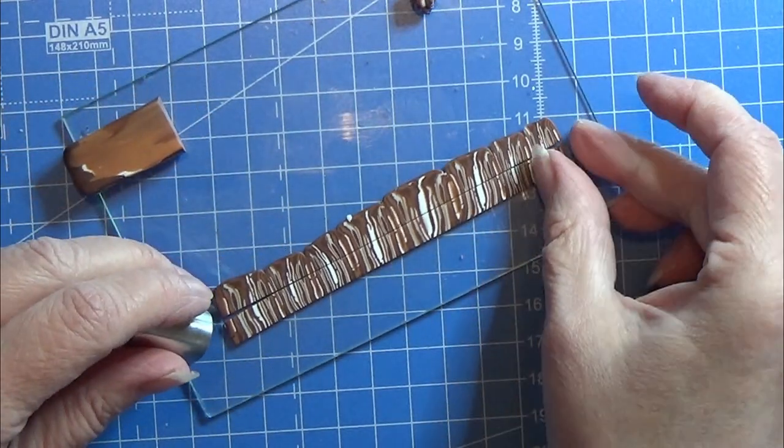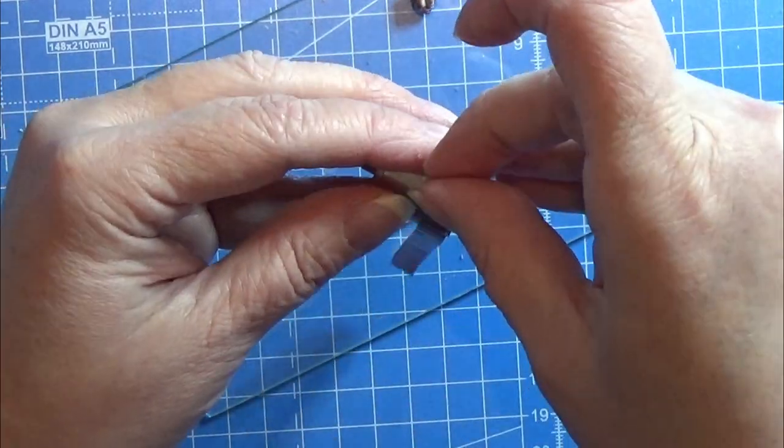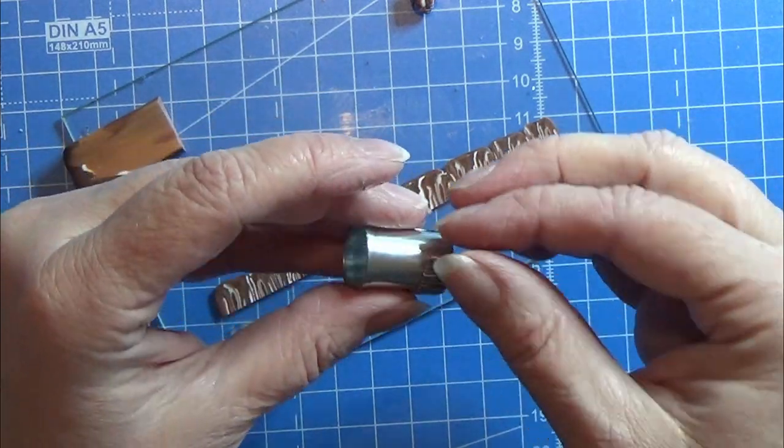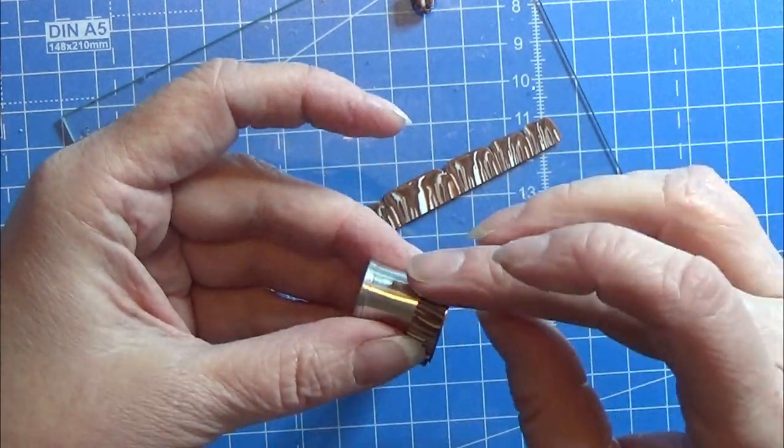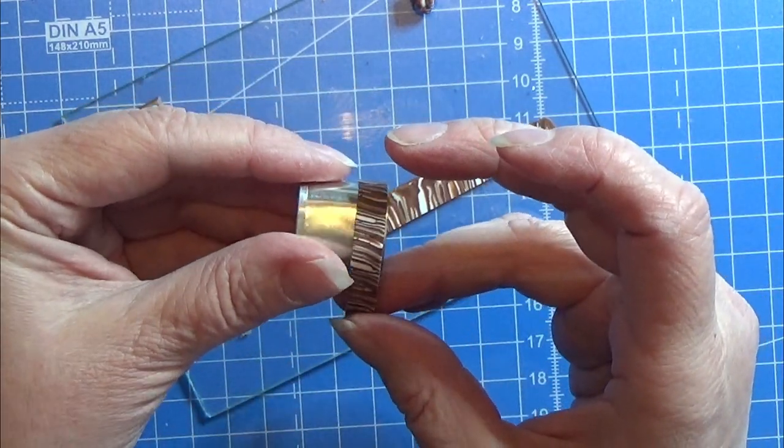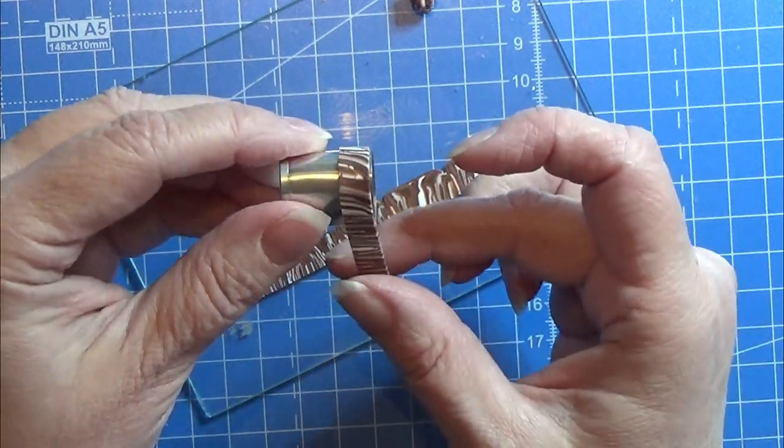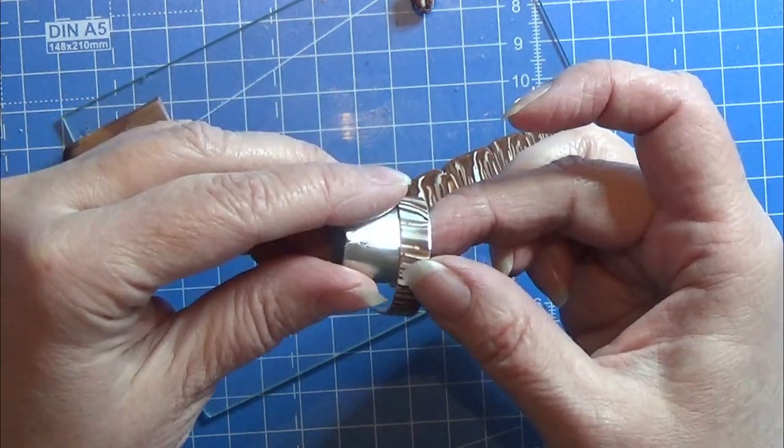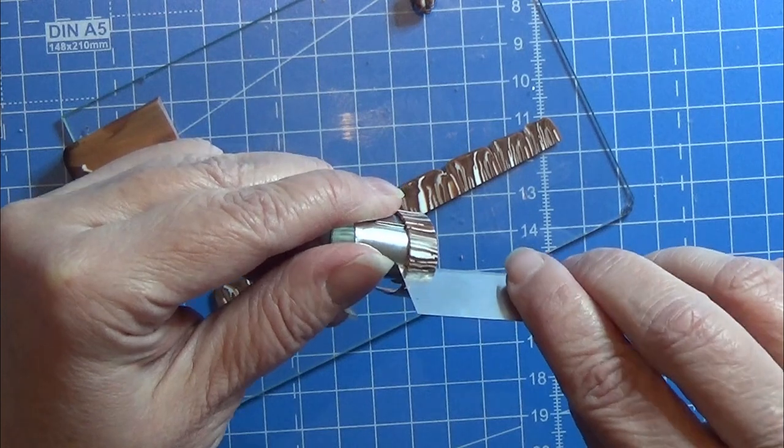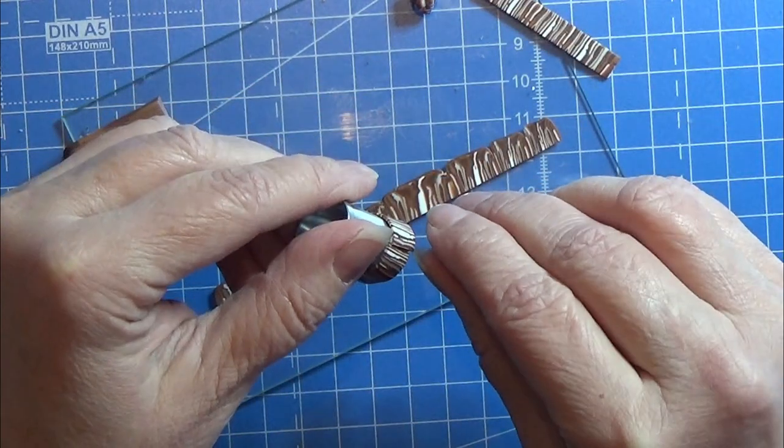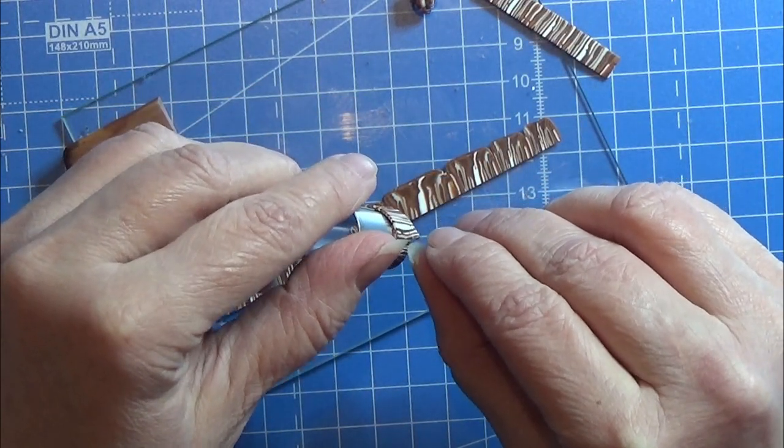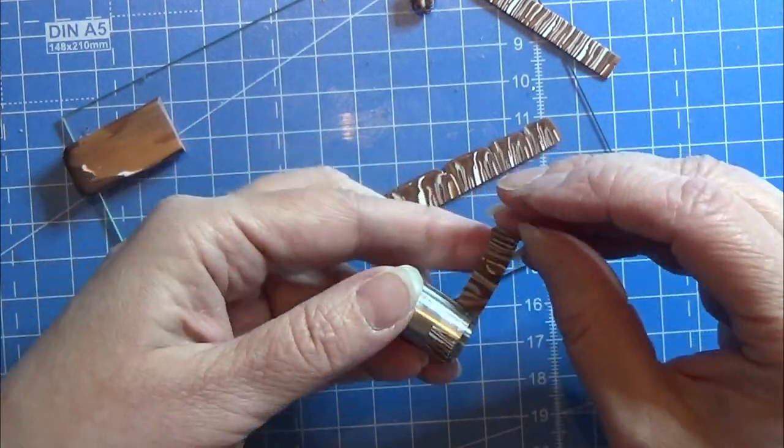I cut out this long strip of this clay and I am wrapping it carefully around the bottom piece of this cutter, just placing it very neat along the edge and cutting it off to length, so it is not overlaying the first layer. There we go.